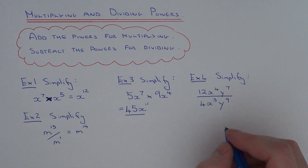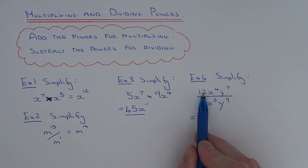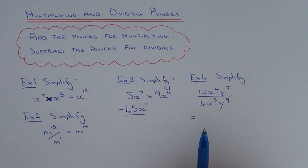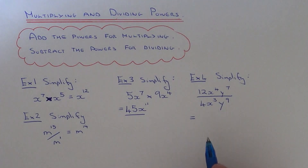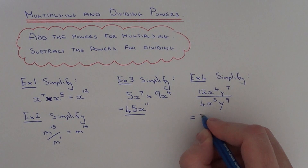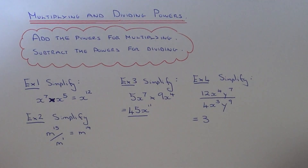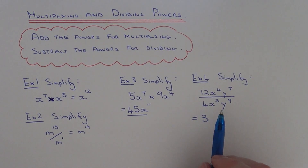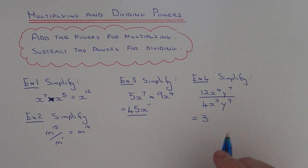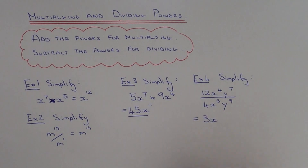So let's go on to example four. This time we are dividing: twelve x to the power of four y to the power of seven divided by four x cubed y to the power of nine. First, divide your two numbers — these aren't powers — so twelve divided by four gives us three. Then looking at the powers of x: x to the power of four divided by x to the power of three. We are dividing, so we take away the powers: four take away three is one, giving us x to the power of one, which we can just write as x.